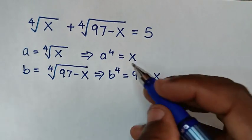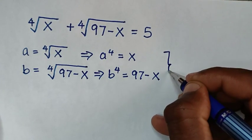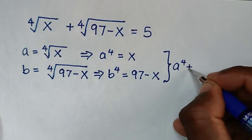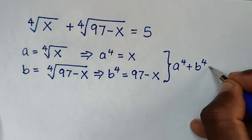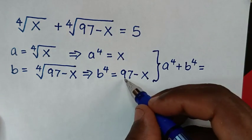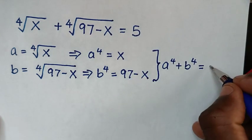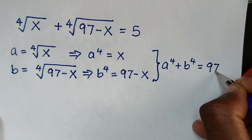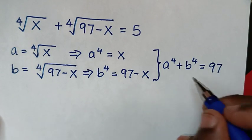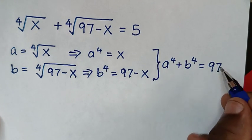Taking the sum, a⁴ + b⁴ = x + (97 − x). The x cancels, so a⁴ + b⁴ = 97. We will substitute this value of 97 later.